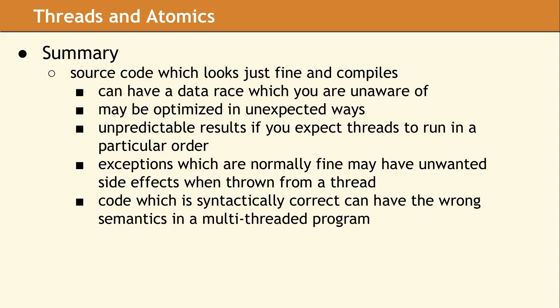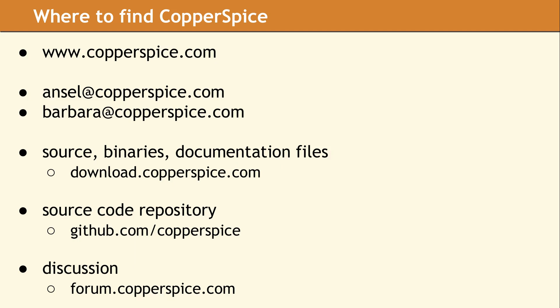In summary, your source code can look just fine, but in a multi-threaded environment it can be easy to overlook a data race — and even worse to debug. Code which is syntactically correct and valid C++ can have the wrong semantics in a multi-threaded program. For more information about Copper Spice and our other libraries, please visit our website at www.copperspice.com. Thanks for watching our video — we hope you found the content of value. If you have any questions, please feel free to email us or leave a message on our Copper Spice forum. Please make sure you subscribe to our YouTube channel and come back in two weeks for our next video.